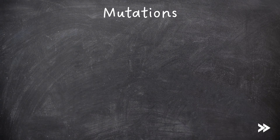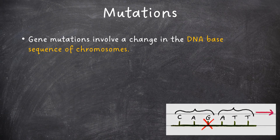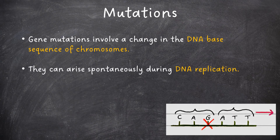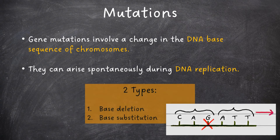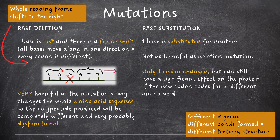Gene mutations involve a change in the DNA base sequence of chromosomes. They can arise spontaneously during DNA replication. The two types we need to know for this part of the specification include base deletion and base substitution mutations. In base deletion mutations, one base is lost and there is a frame shift, meaning that all bases move along in one direction, which results in every codon being different.